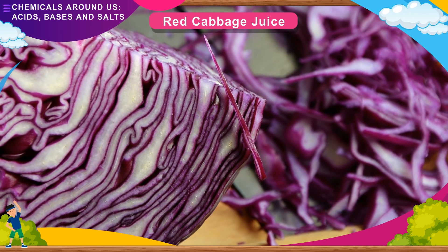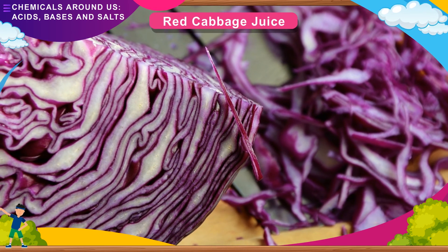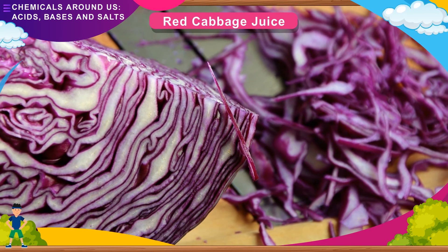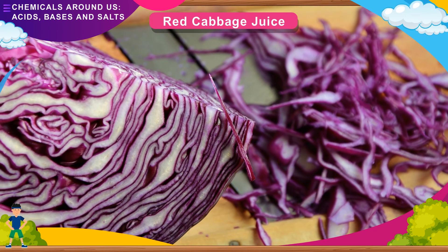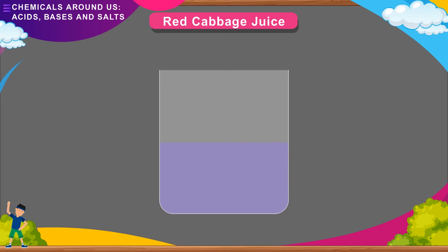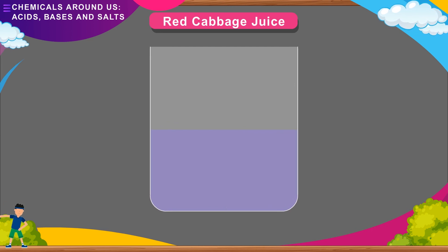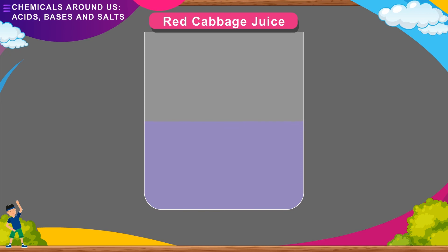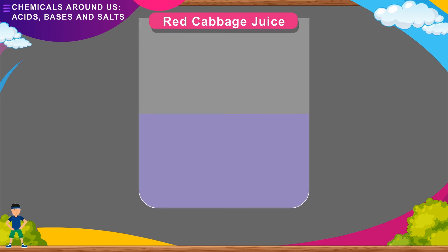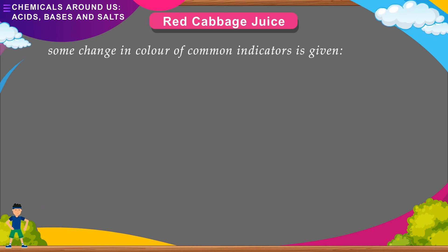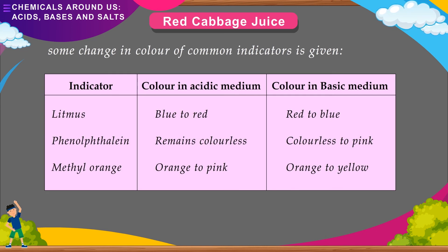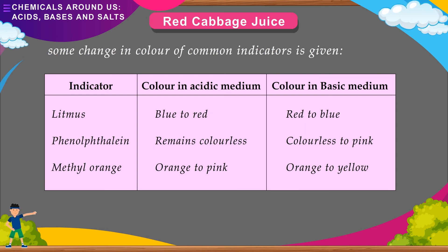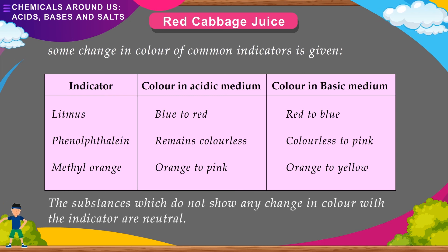Red cabbage can also be used to make an acid-base indicator. Red cabbage juice, which is purple in color, turns green in a basic medium and red in an acidic solution. To prepare it: chop some red cabbage, heat water in a beaker, add the chopped cabbage pieces, let the mixture cool, then strain it into another beaker. The substances which do not show any change in color with indicators are neutral.